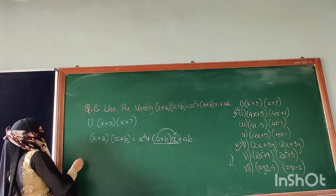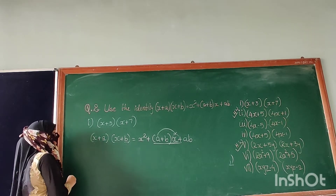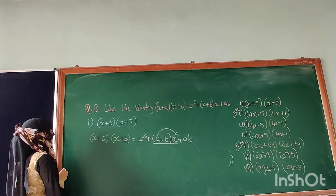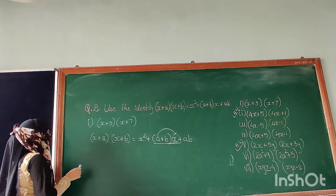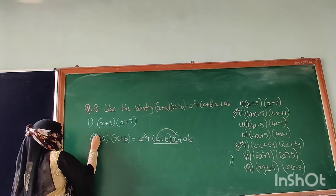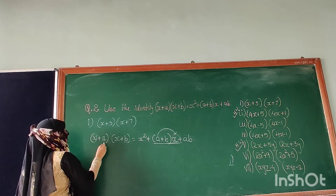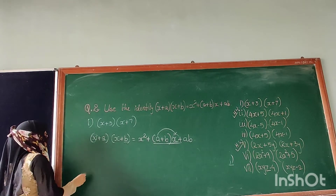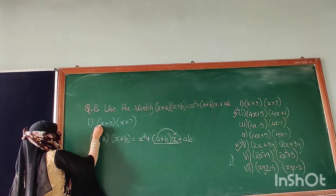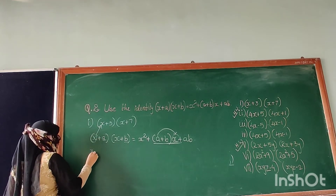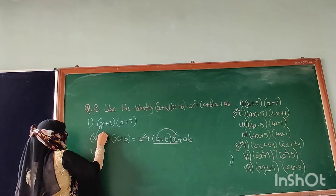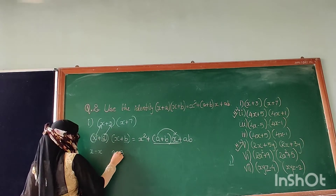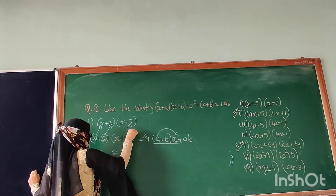Let's begin with the steps. The first step is you will write down the identity, and then after, you will find the values of x, a, and b. So here you have to compare with the question. So x is x, a is 3, x is x, and b is 7.